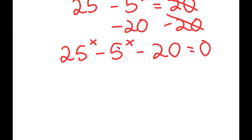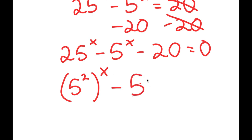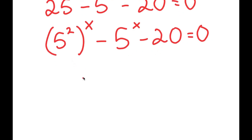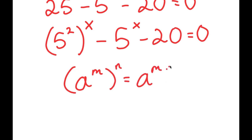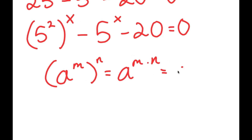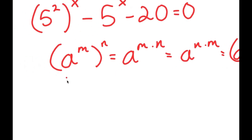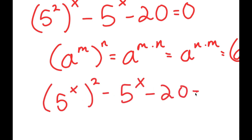Now 25 to the power of x, I can rewrite this as 5 squared to the power of x. Using the property that a to the power of m to the power of n equals a to the power of m times n, and rearranging, 5 to the power of 2x equals 5 to the power of x to the power of 2. So the equation becomes (5^x)^2 minus 5 to the power of x minus 20 is equal to zero.